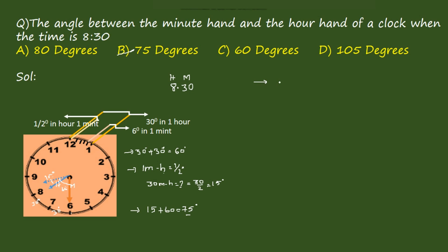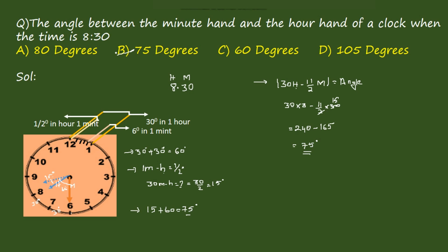Solving by the formula method: 30H minus 11M/2, mod, equals angle. H is 8 and M is 30. Substituting: 30 into 8 minus 11/2 into 30, which becomes 240 minus 165, giving 75 degrees. Since it is positive, no mod adjustment needed. The answer is also 75 degrees — the same as the theoretical method.